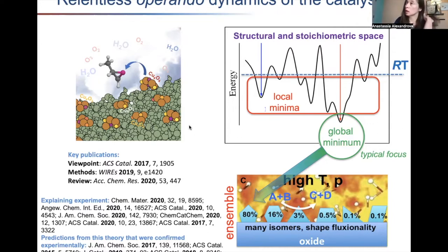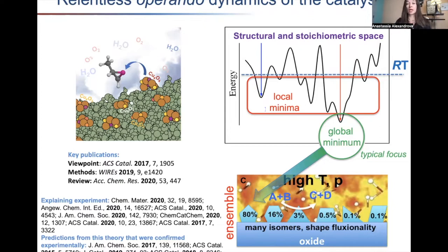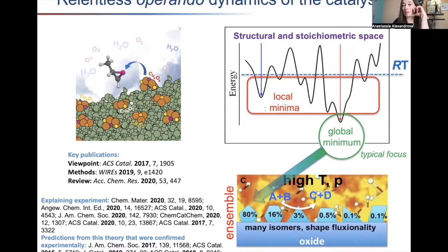In our modeling, we try to include reaction conditions as much as possible — temperature, partial pressures of gases, and for electrochemistry, charging of the electrode, introducing electrolyte with compensating charge distributed by Boltzmann distribution, or sometimes explicit solvent. With all these conditions you have this ensemble of different states present to varying degrees depending on their accessibility. As chemists, we quite naturally suspect that less stable species should be more reactive.